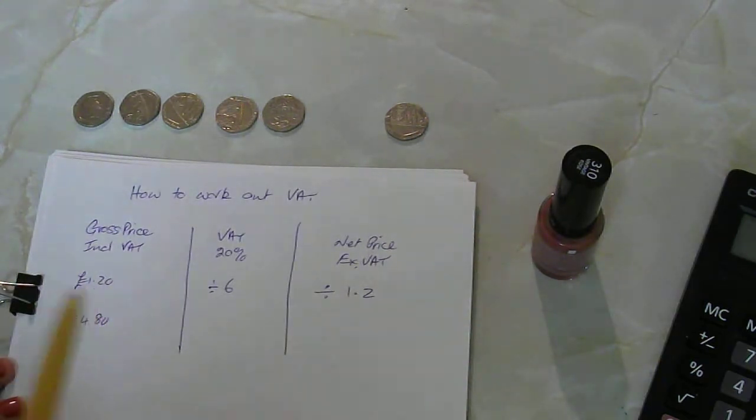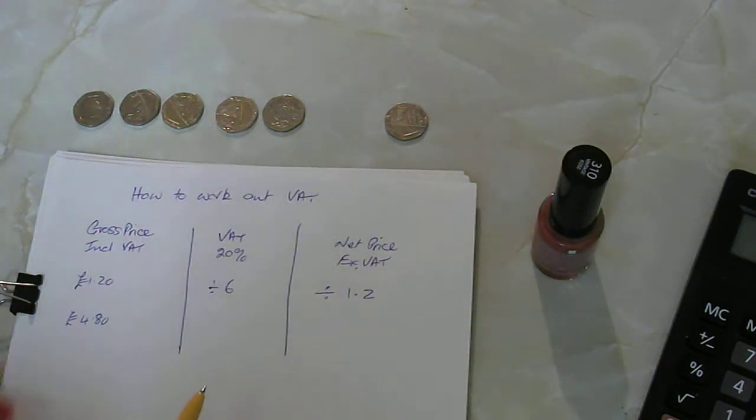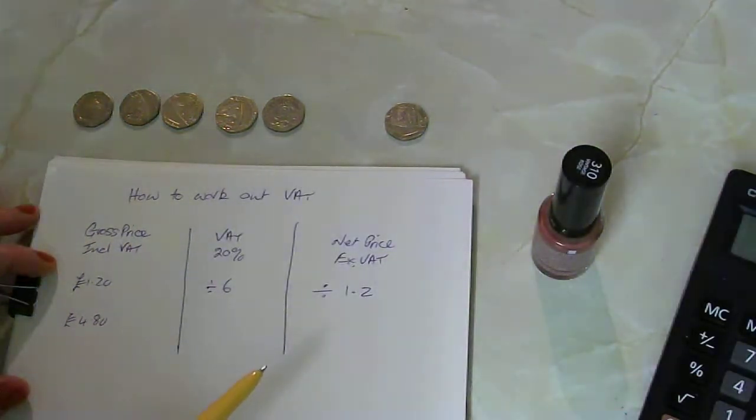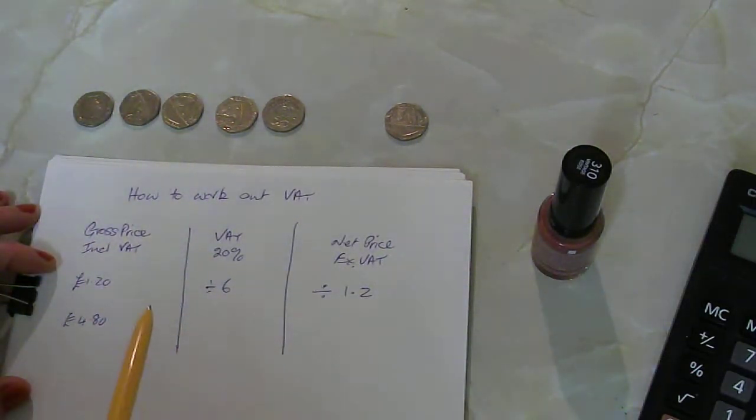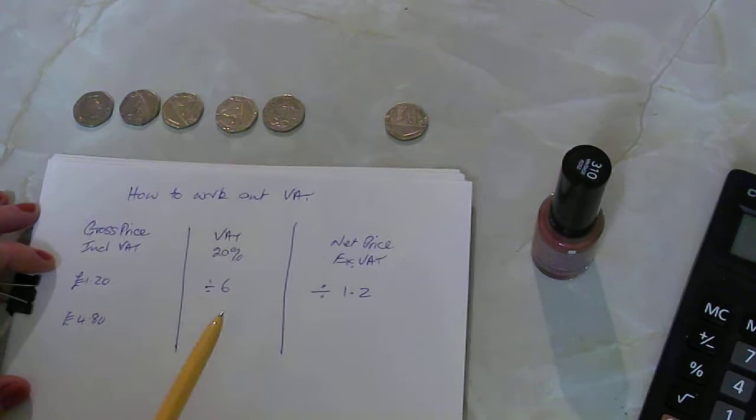So once we know what our gross price is or the price inclusive of VAT, then we can do some simple sums to find out what the VAT would be or what the price without the VAT would be.